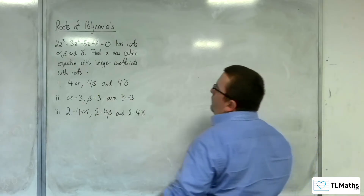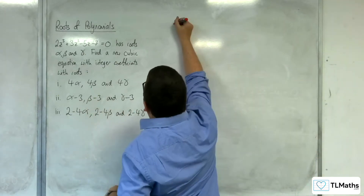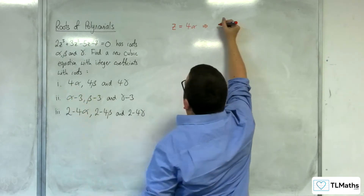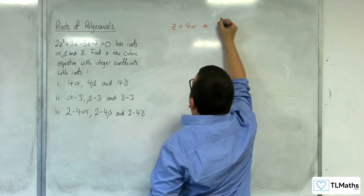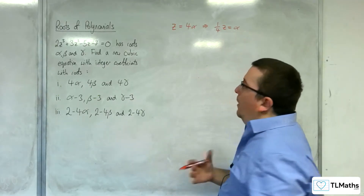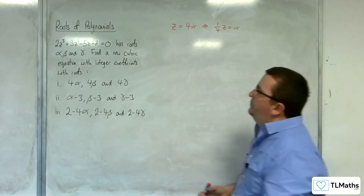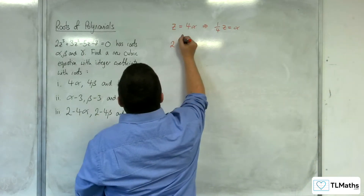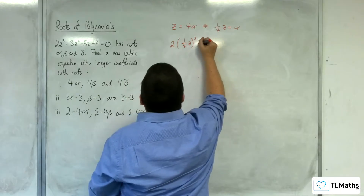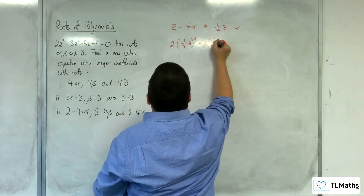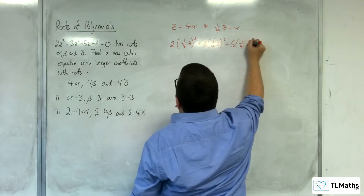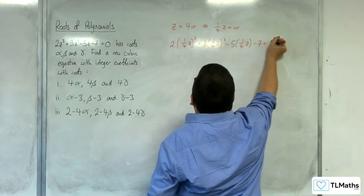I'm not going to bother writing down all three each time. So if we just look at the first one: z equals 4 alpha, then 1 quarter z would be equal to alpha. So I need to substitute z for 1 quarter z. So we have 2 lots of 1 quarter z cubed, plus 3 lots of 1 quarter z squared, take away 5 lots of 1 quarter z, take away 7 equals 0.